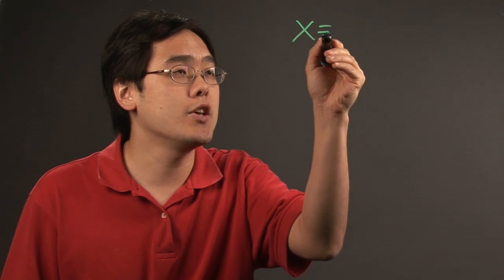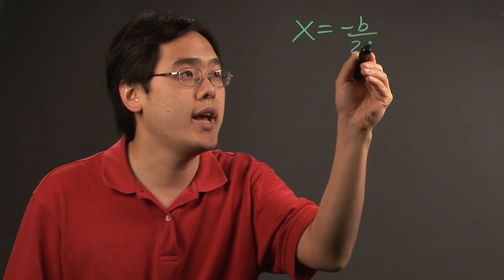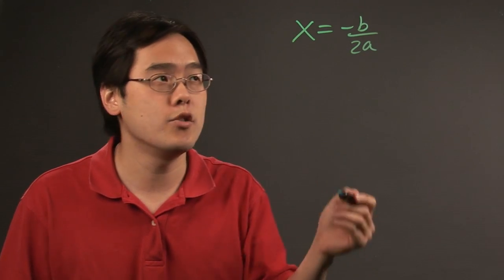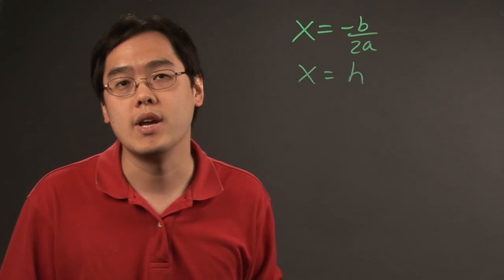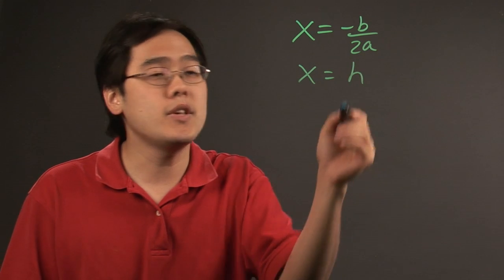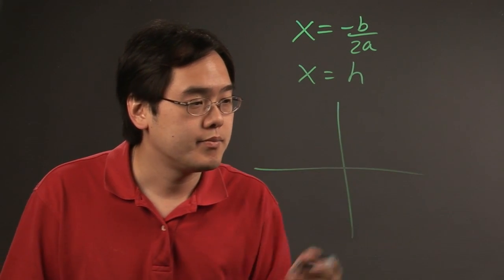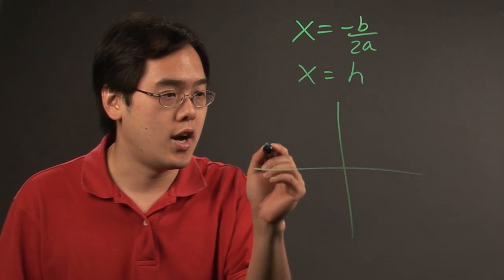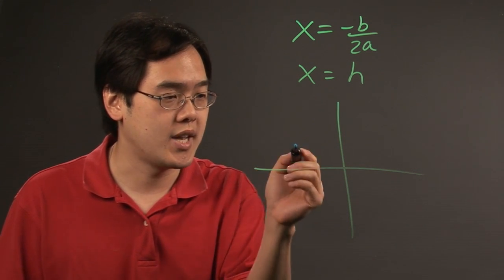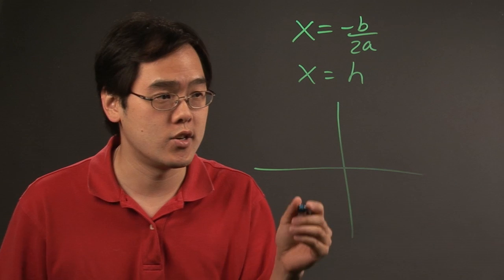Now, the equation x is equal to either negative b over 2a, if the parabola is given in polynomial form, or x equals h. Both of these numbers can be negative, and that happens when the parabola is drawn on the left side of the x-axis, especially if the vertex is there.